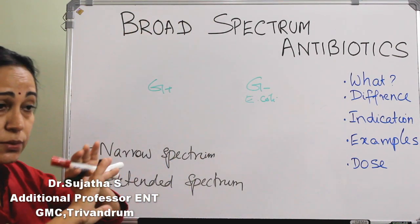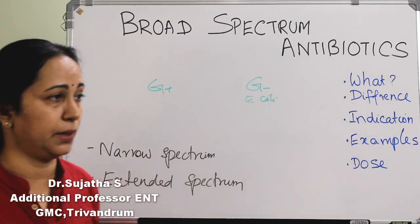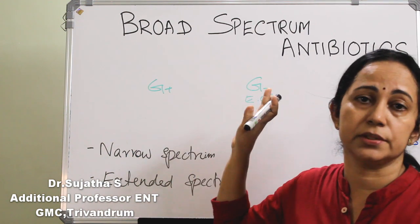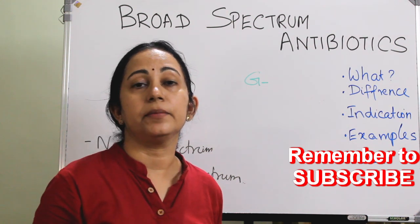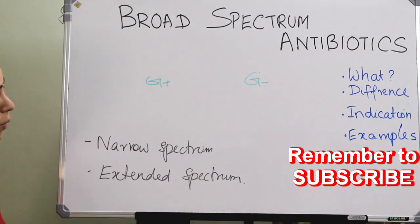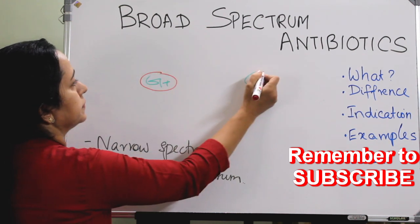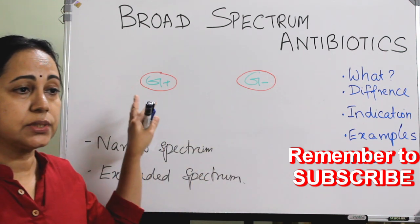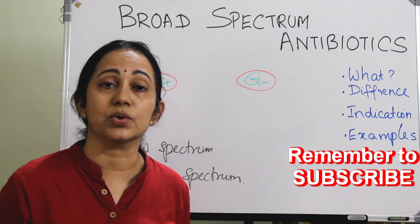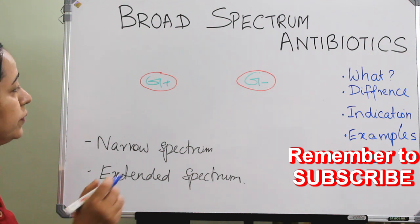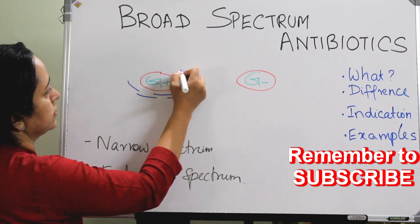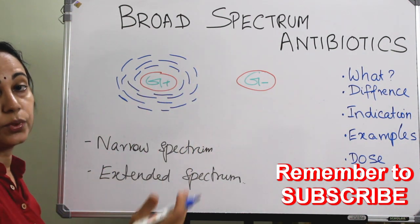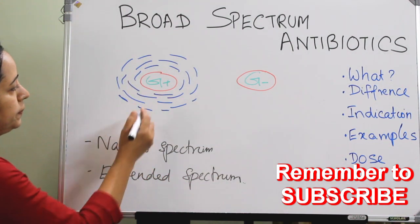But broad spectrum will act on gram positive and gram negative both. To understand that, what is the basic difference between a gram negative and a gram positive bacteria in morphology or structure? Both have got a cell membrane, and over the cell membrane they have got a cell wall. Gram positive bacteria has got a thicker cell wall and gram negative bacteria has got a thinner cell wall. This cell wall is made up of sugar backbones — otherwise called glycan — connected by peptide links, glycopeptide or peptidoglycan links.